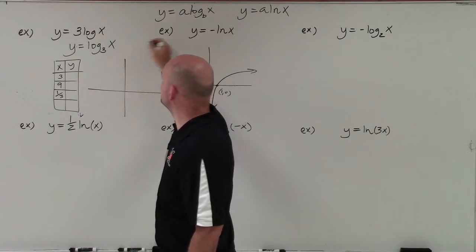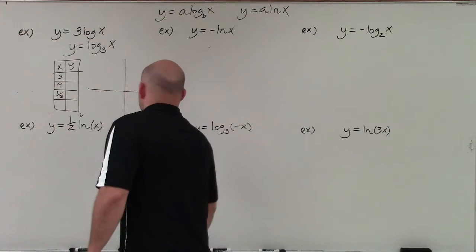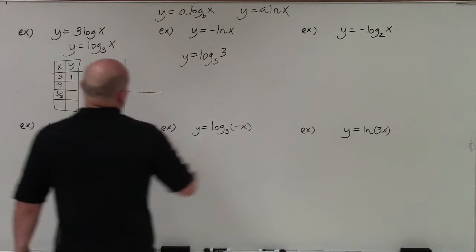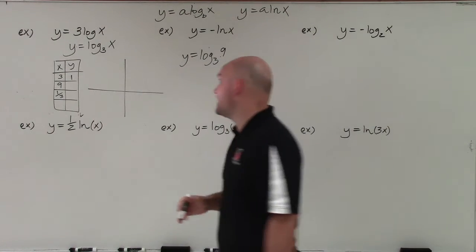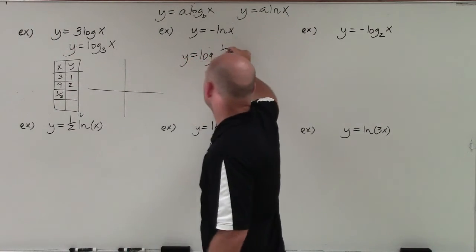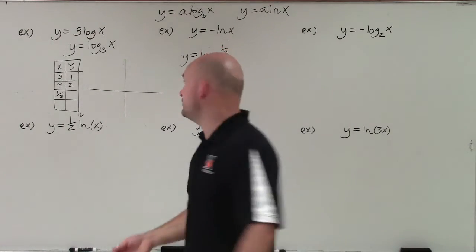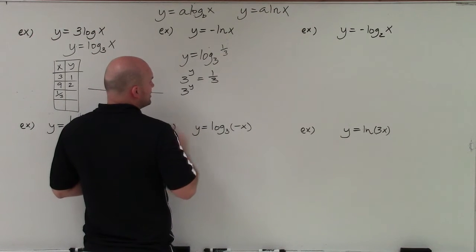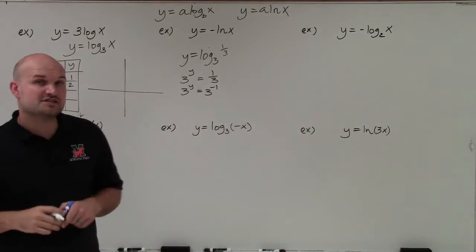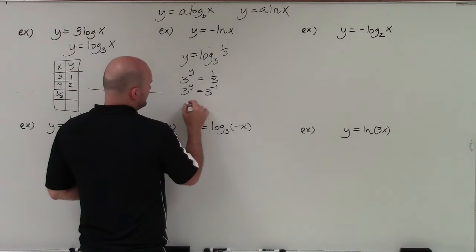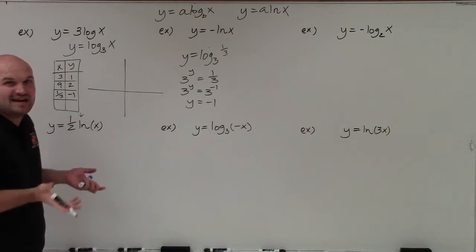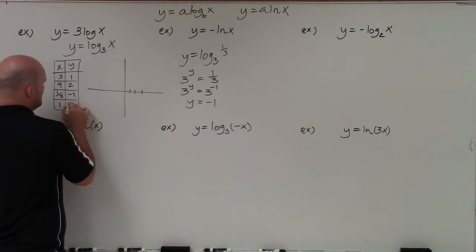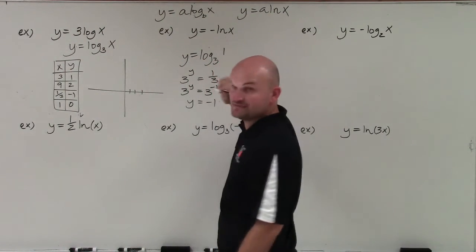So if I had y equals log base 3 of 3: 3 raised to what power gives you 3? That answer is 1. If I change that to 9: 3 raised to what power gives you 9? That answer is 2. If I change this to 1/3: any time you have a fraction, you can rewrite it as a negative exponent, so 1/3 equals 3 to the negative 1. Therefore, using the one-to-one property, y equals negative 1. I could also use x equals 1: 3 raised to what power gives you 1? That answer is 0.